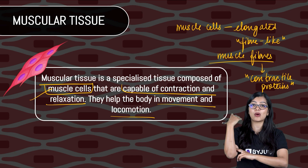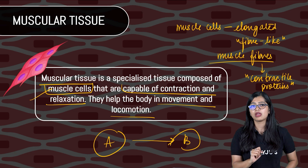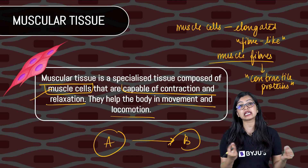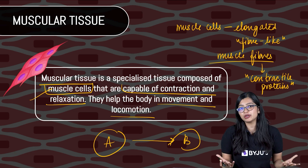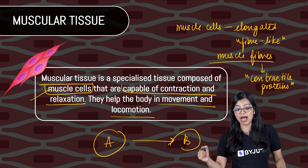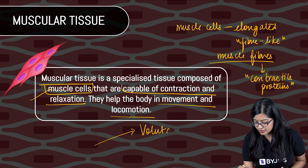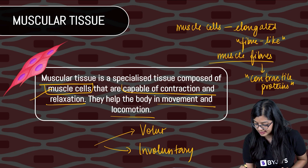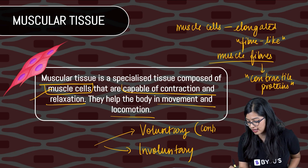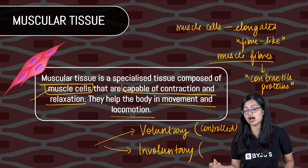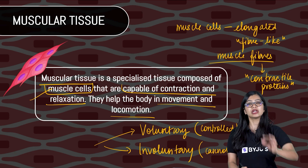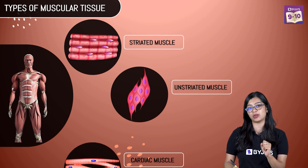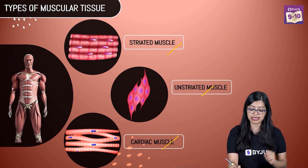Movement is when we change position — like moving a hand. Locomotion is when we go from one place to another. Some movements we can control, and some we cannot — for example, after swallowing food, we cannot control the movement of food through the digestive system. So movement in our body can be of two types: voluntary — movements which can be controlled by us consciously — and involuntary — movements which cannot be controlled by us consciously. With this understanding, we can now look at the different types of muscular tissue: striated, unstriated, and cardiac muscular tissue.